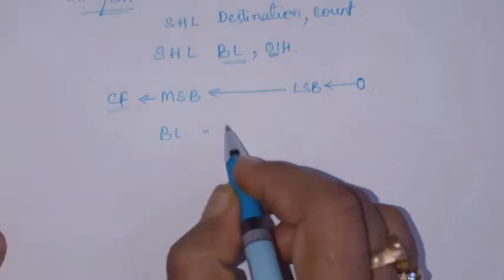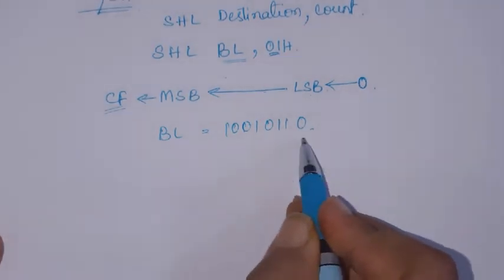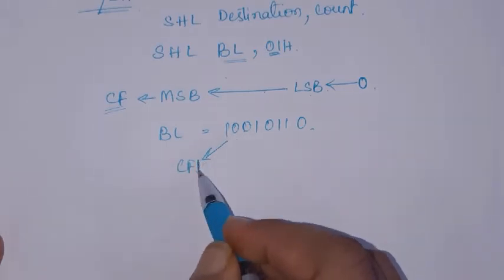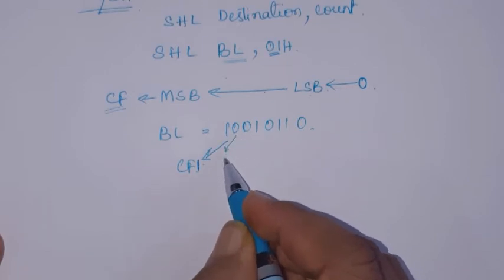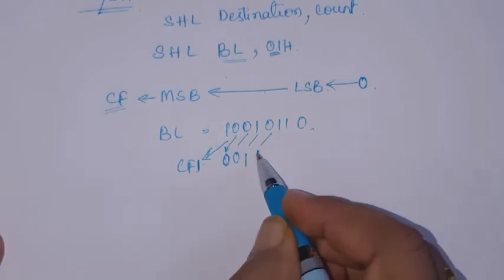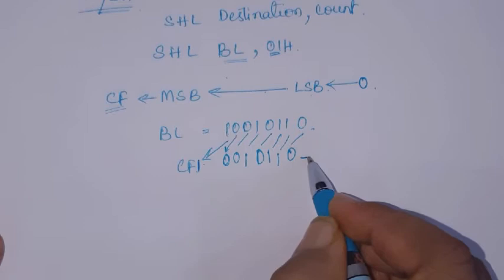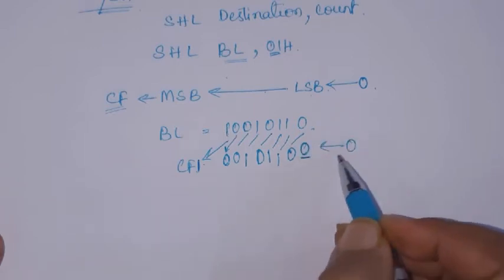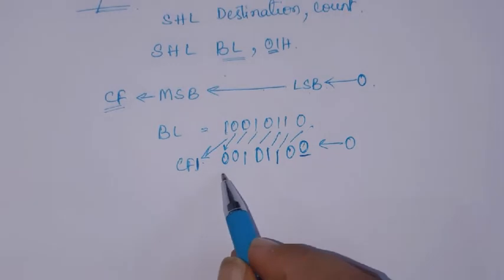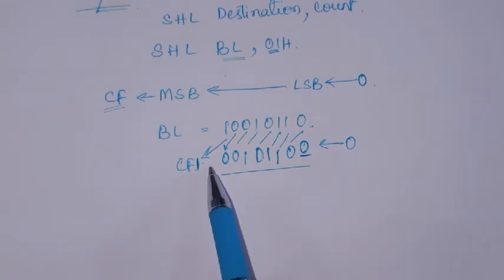For example, suppose in the BL register you have certain contents. If you shift by one bit, the MSB will be shifted to the carry flag — so carry flag will have 1. Each remaining bit shifts to its left position, and the LSB position becomes free. Externally, zeros will be shifted into this LSB position.